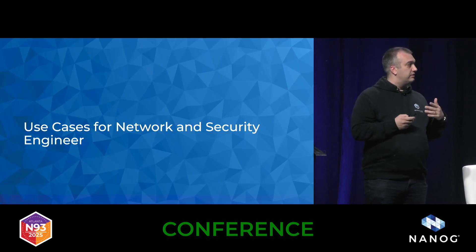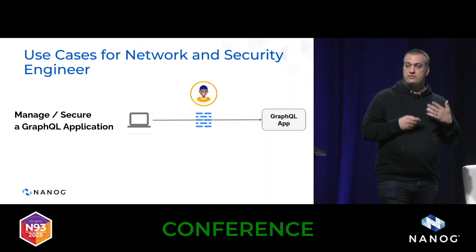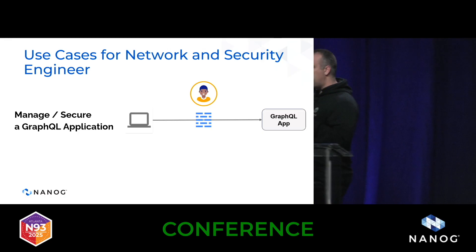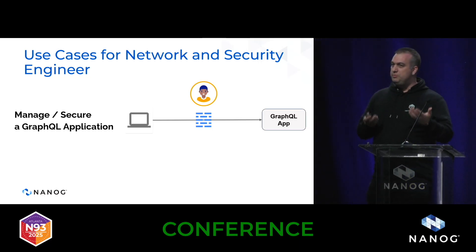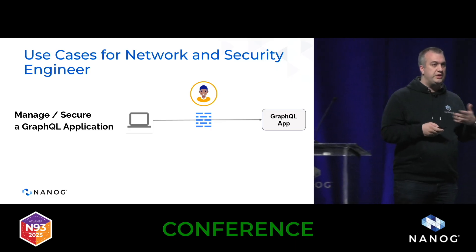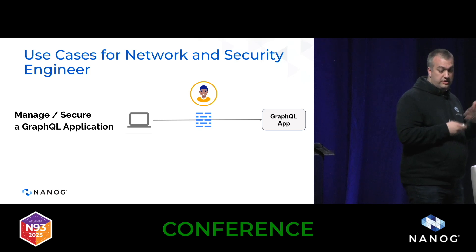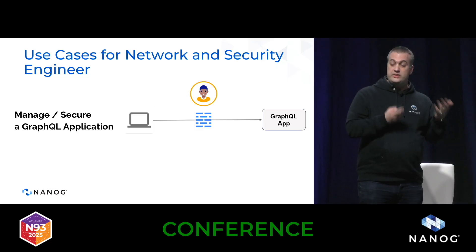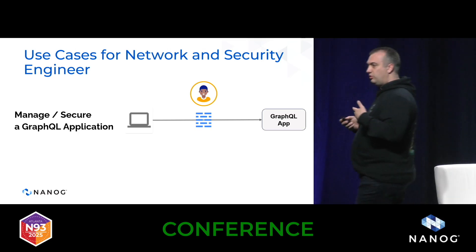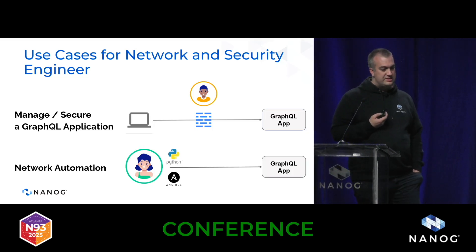There are two things that are important for network and security engineers. The first is that at some point you're going to have to secure these applications. We have a lot of tooling built around REST — we understand REST traffic, HTTP status codes, and how to differentiate query types. With GraphQL, it's very different; we don't have the same information and securing this traffic needs to be done differently. The second use case, closer to my field, is network automation.